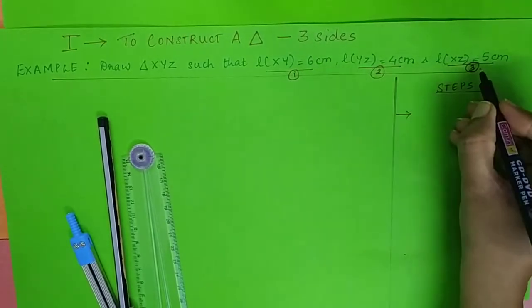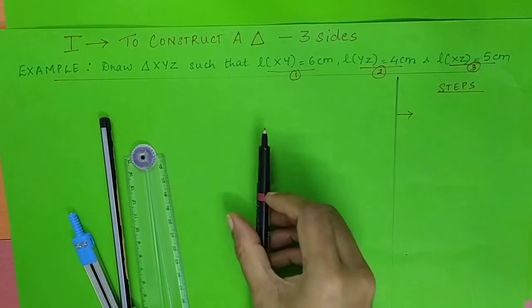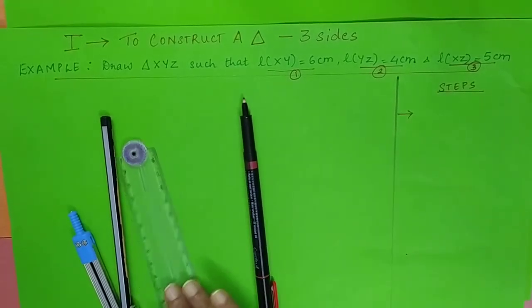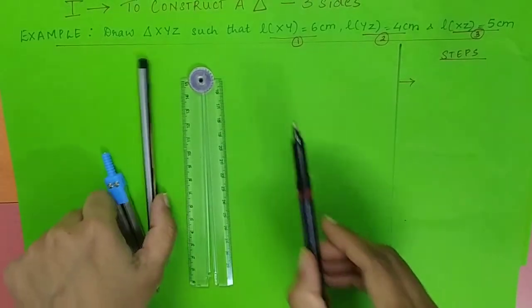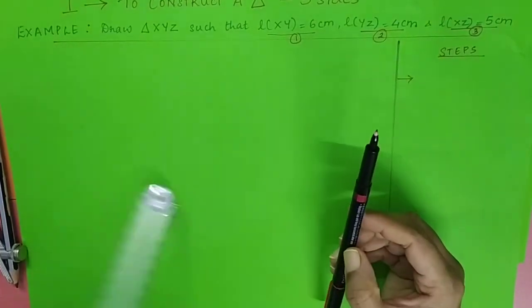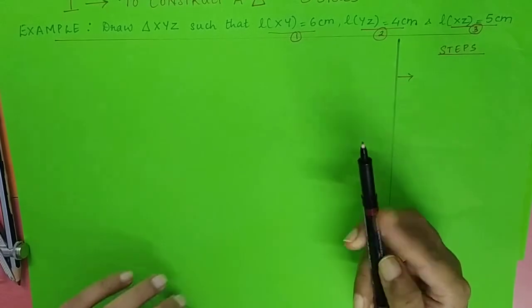The length of all three sides are given. Now for construction, you need a pencil, a scale, and a compass. We begin with the construction now.